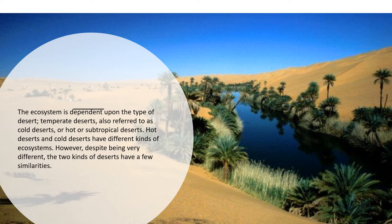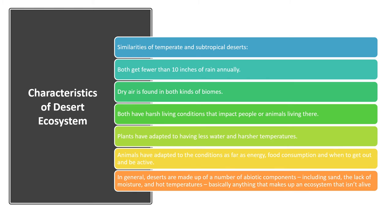Despite being very different, the two kinds of deserts have a few similarities. Both very cold deserts like Antarctica and very hot deserts like the Sahara get very little rainfall every year — less than 10 inches. Dry air is found in both kinds of biomes. Both have very harsh living conditions that impact the people and animals living there. Plants have adapted to having less water and harsher temperatures, and animals have adapted in terms of energy, food consumption, and when to be active. In general, deserts are made up of abiotic components including sand, lack of moisture, and extreme temperatures.